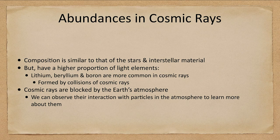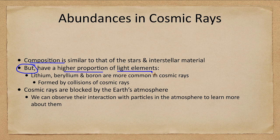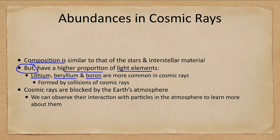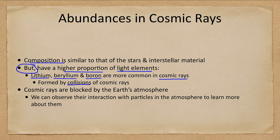What do cosmic rays tell us? Since their composition is similar to stars and interstellar material, they have a higher proportion of light elements. There's hydrogen, helium, and metals, but three elements in between hydrogen and helium and the common carbon, nitrogen, and oxygen are lithium, beryllium, and boron. These are elements not formed in stars, so they are more common in cosmic rays and are actually formed through collisions of cosmic rays.